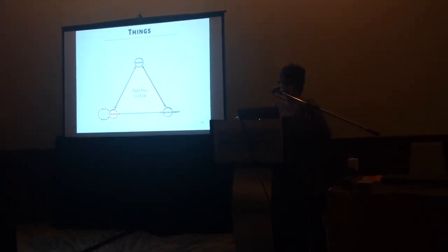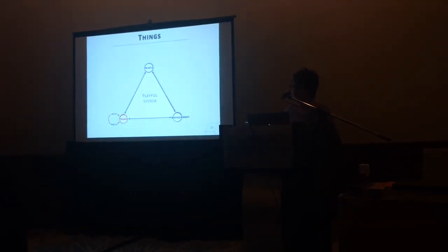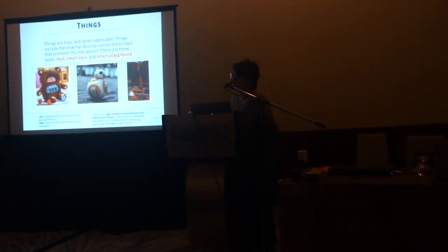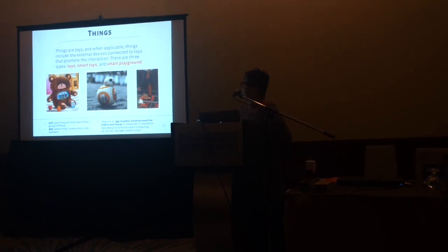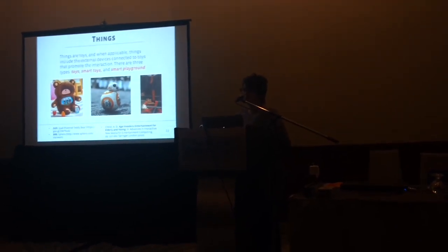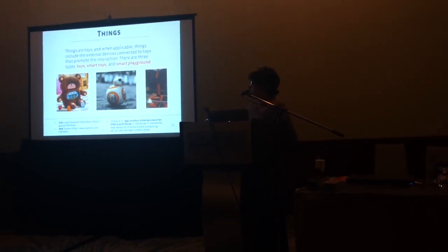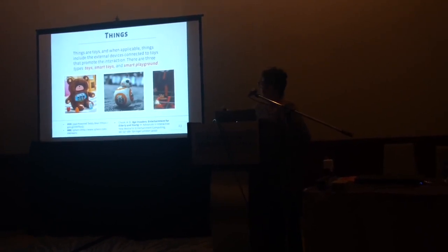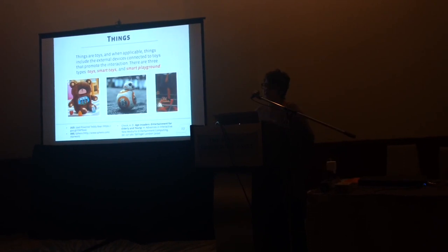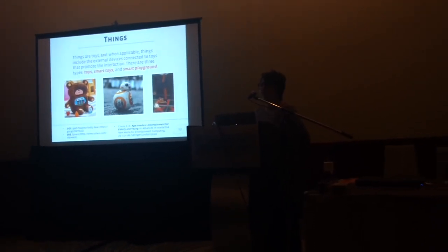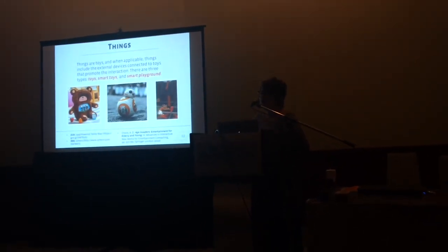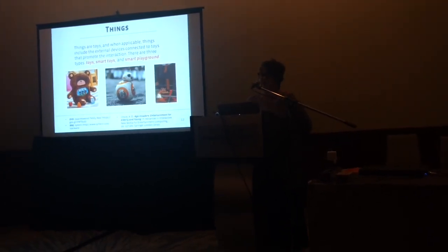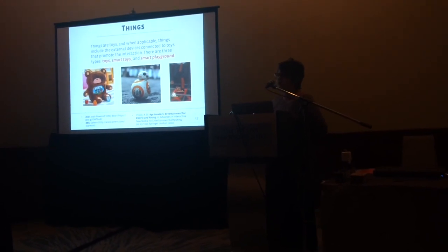Starting with the things, they can communicate by active and passive technology. The things are toys, and include the auxiliary devices connected to them, and they can be of three types. There are traditional toys, which need external technology in order to promote interaction, and they can be both passive and active, such as the teddy bear and touchpoint toys. Or they can be smart toys, such as the BB-8 from Sphero, which has embedded technological capabilities that can detect proximity with the environment and other things, and also connect to the smartphone. Or they can be a smart playground, consisting of a larger toy like a smart floor or a big tower, or an environment with multiple connected toys.